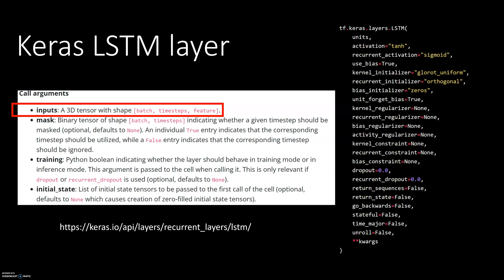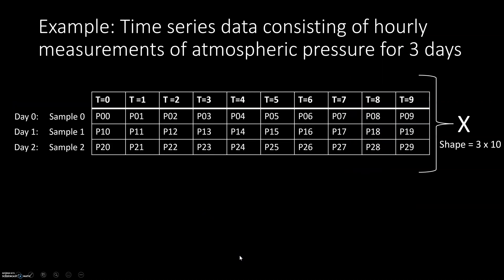So my hope is that by the end of this video, you will be able to properly reshape your input data to the format that Keras LSTM layer is expecting, which is batch size, time steps, and features. In order to understand how to reshape our data, we will start with an example. This is a pretty simple example and it's a time series data. The reason I picked time series data is because LSTM models are generally used for time series data.